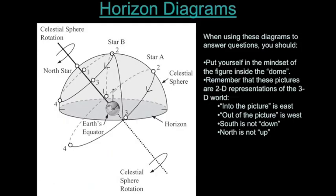We're going to be working with horizon diagrams. Horizon diagrams allow us to trace or mark the positions of things on the celestial sphere. The difficulty is that they involve some spatial reasoning that you may not have practice with, so the first couple of tutorials will get you to really think deeply about the celestial sphere using these diagrams.